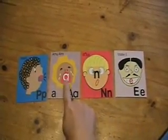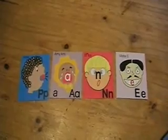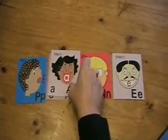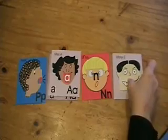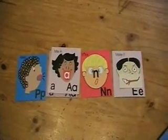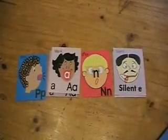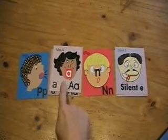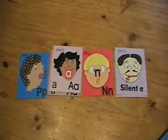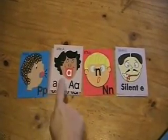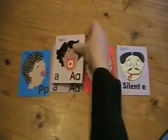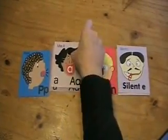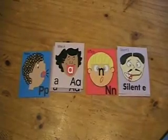Babies cry: a-a-a. So the mother of the baby, Miss A, comes in and she says: you be silent, and she silences Mr. E. She turns him into silent-e, and now she takes care of the baby and takes care of the sound: p-a-n. So we have the crybaby sound a-a and the happy long vowel sound a-a-a.